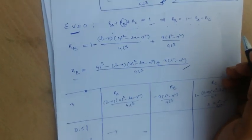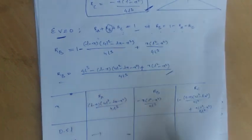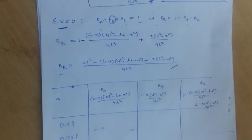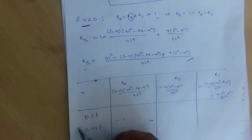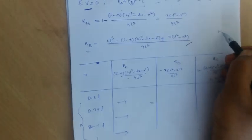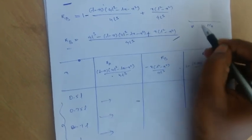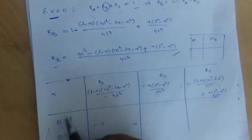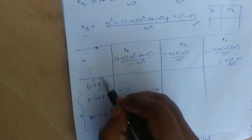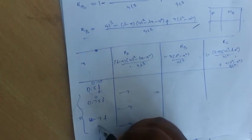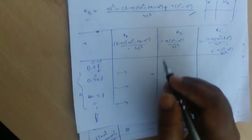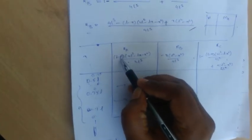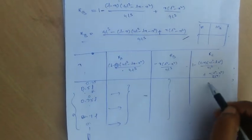With all reactions and moments determined, we calculate values at specific positions by substituting different x values such as 0.25L, 0.3L, 0.5L, 0.75L, 0.8L, 0.9L, up to x = L. By varying x, we obtain corresponding R_A, R_B, and R_C values.